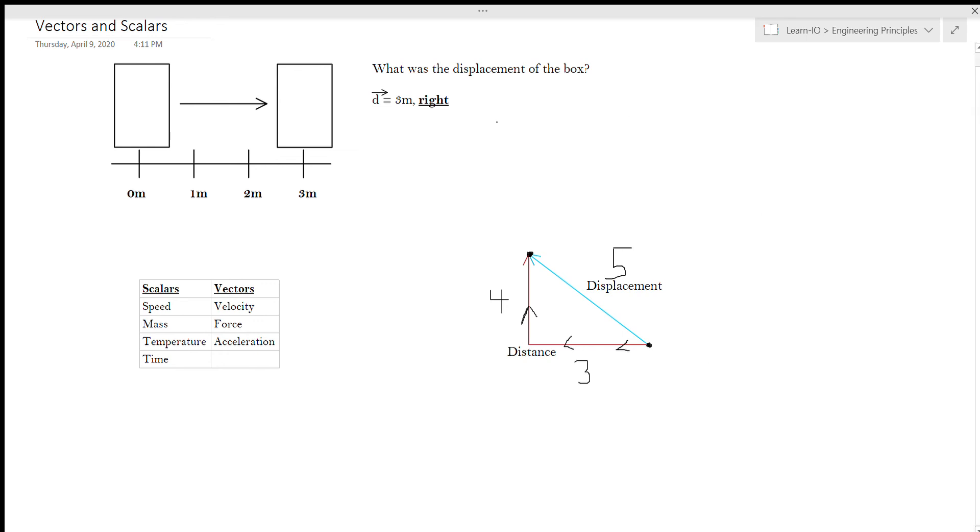So taking this back to our problem, the displacement is a vector quantity. So while the box travels three meters, we need to add a direction to it right here. The box travels three meters to the right.